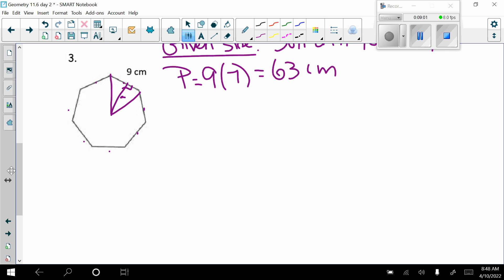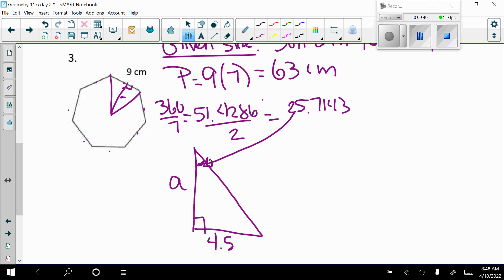Again, I need to find out what is my central angle. So 360 divided by 7, my central angle this time is not a nice whole number: 51.4286. I want to cut that in half. And I find that as 25.7143. So if I draw this triangle out, this is now 4.5 because it's half of 9. This is what I'm looking for, my apothem. This angle right here is that 25.7143.